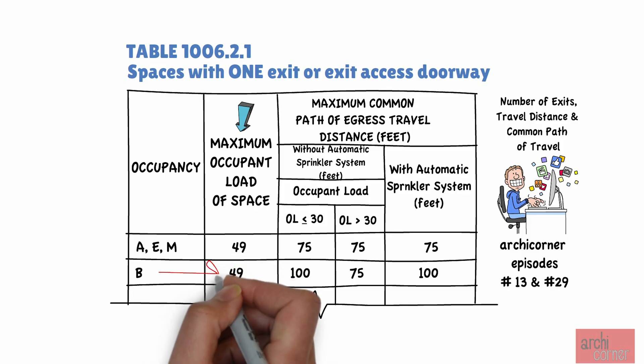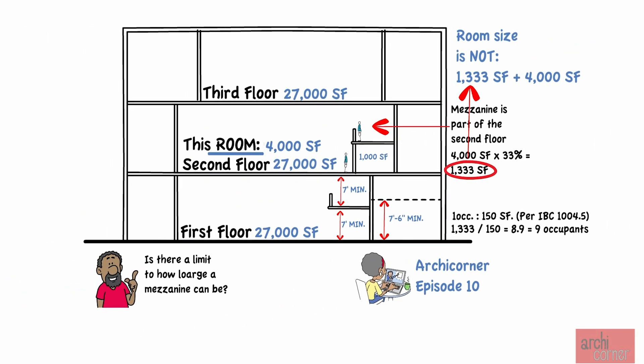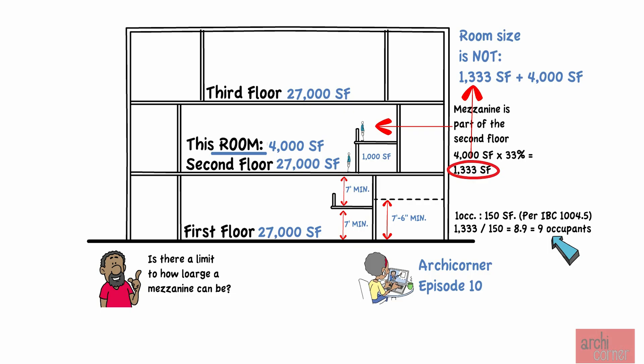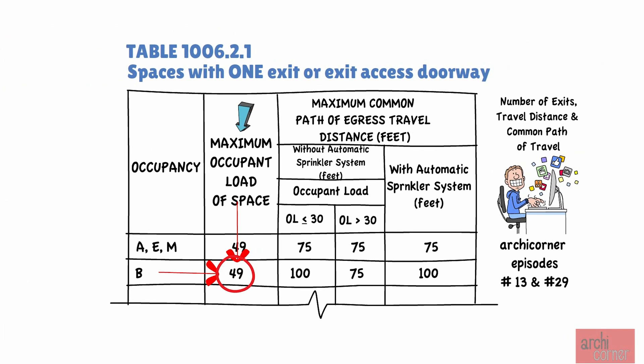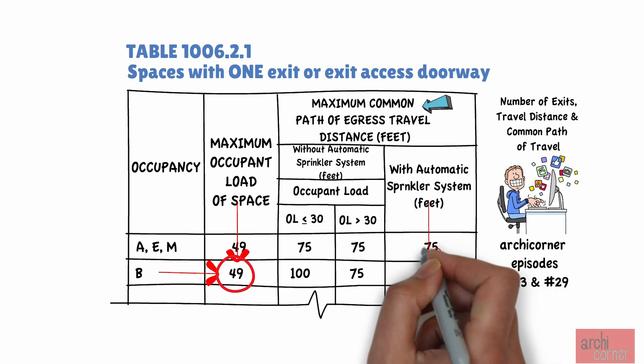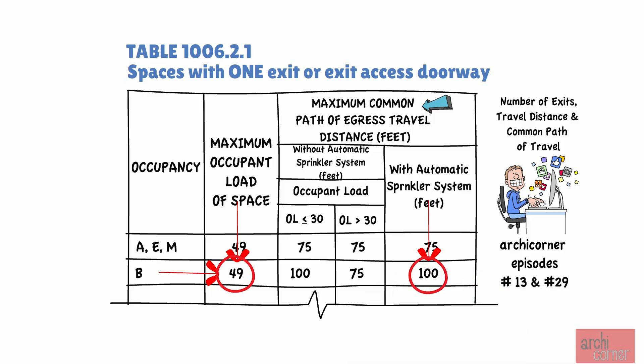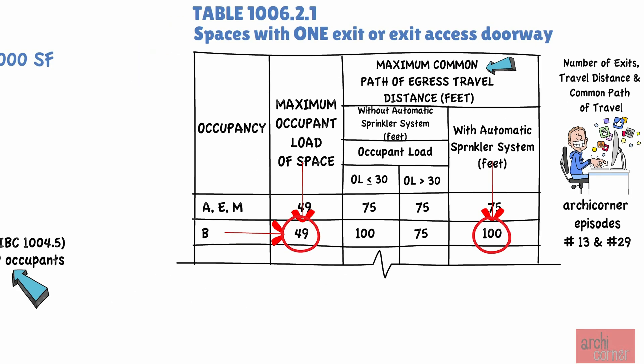Using our example, since we have a B occupancy, the maximum occupant load we are permitted to have and still be okay with one exit is 49. Since we only have nine occupants in our mezzanine, we are okay with just having one exit. But just to make sure we cover this, be mindful that the distance to the exit from the mezzanine should be a maximum of 100 feet. If we exceeded that maximum, we would need to discuss the maximum common path of travel distance allowed and provide two exits, and a mezzanine that could potentially require two stairs.